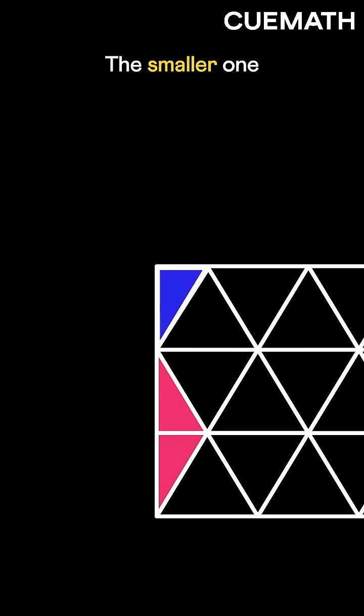The smaller one is exactly half of the larger triangle, so its area is half.